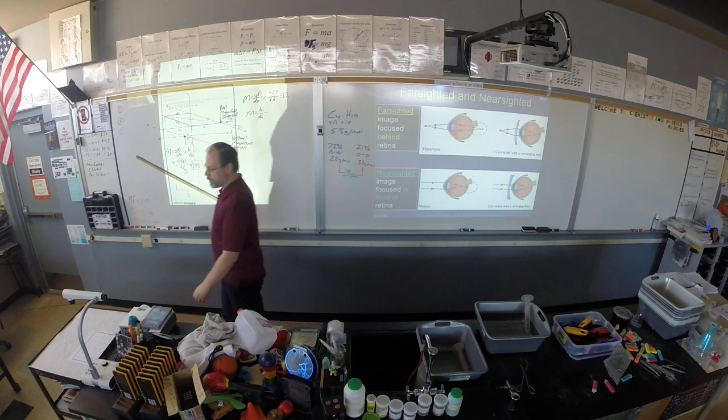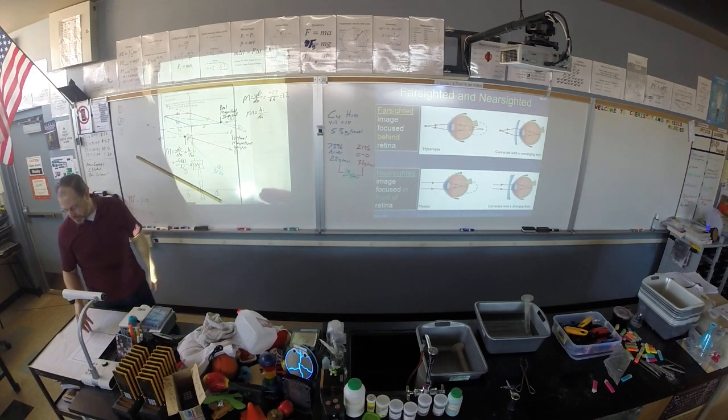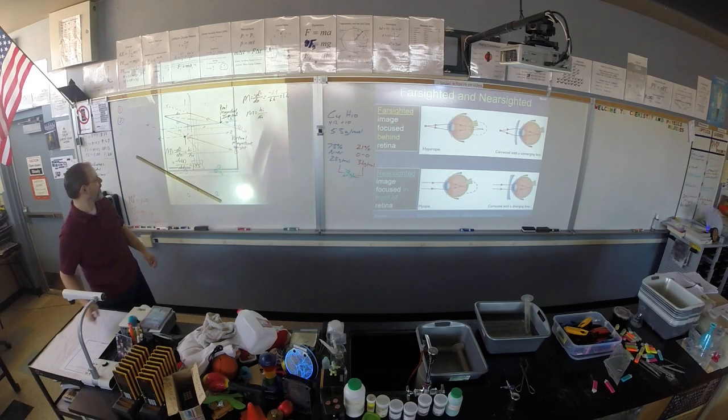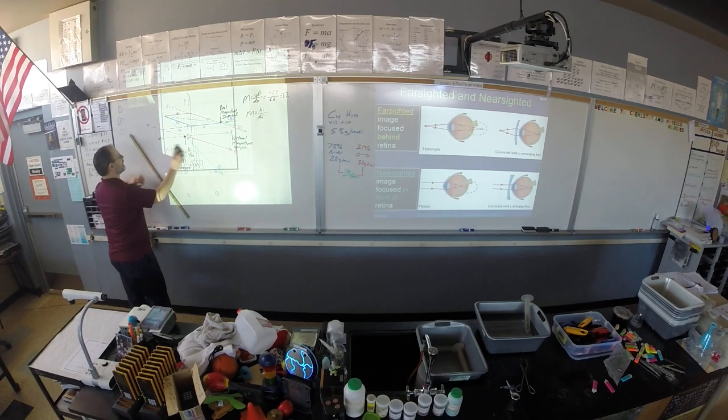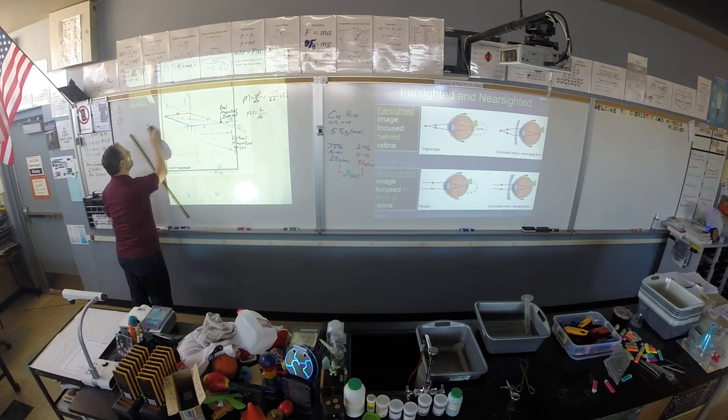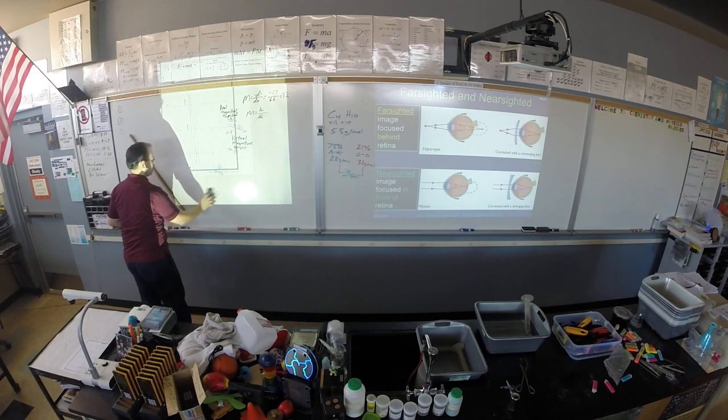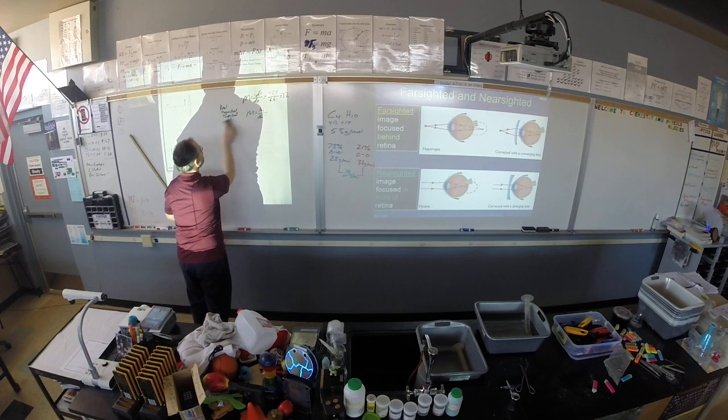And if you have contacts, the center of your contact is actually the thinnest part of your contact. So what if you're both? If you're both? You've got really big, small eyes. Yeah, I don't know. Old bifocals? That's not my wheelhouse.